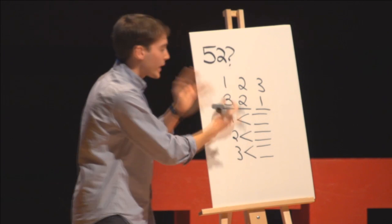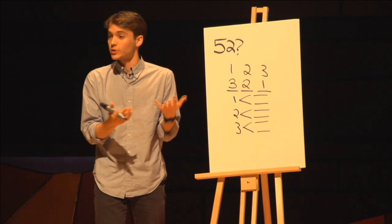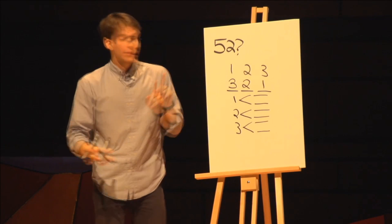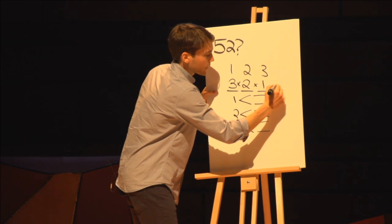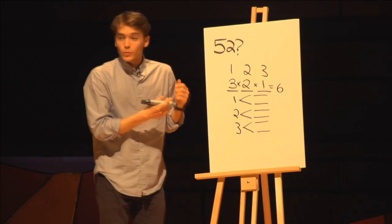Now we can write out every possible scenario, and you'll count, and there are six ways to do this. The easier way is to multiply these numbers together. Three times two times one. That equals six. And we have a pattern.